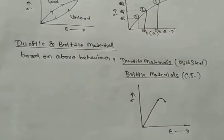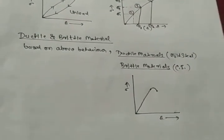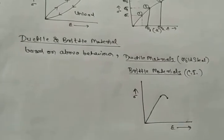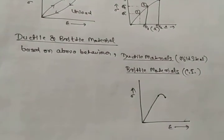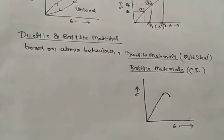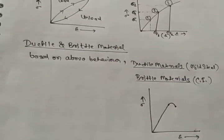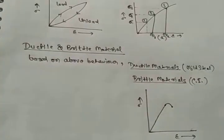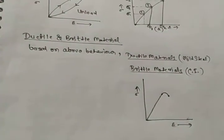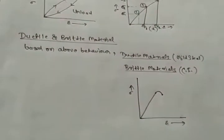For example, ductile material we consider mild steel and brittle material we consider cast iron. In ductile material, the capability of material to allow the large deformation or large tension without failure is termed as ductility. The material with high ductility are termed as ductile material.